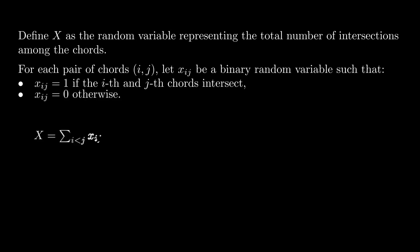So X equals summation xij over all pairs of chords. Now by linearity of expectation, E[X] is equal to summation of E[xij]. Since xij is an indicator variable, its expectation is equal to the probability that chords i and j intersect.